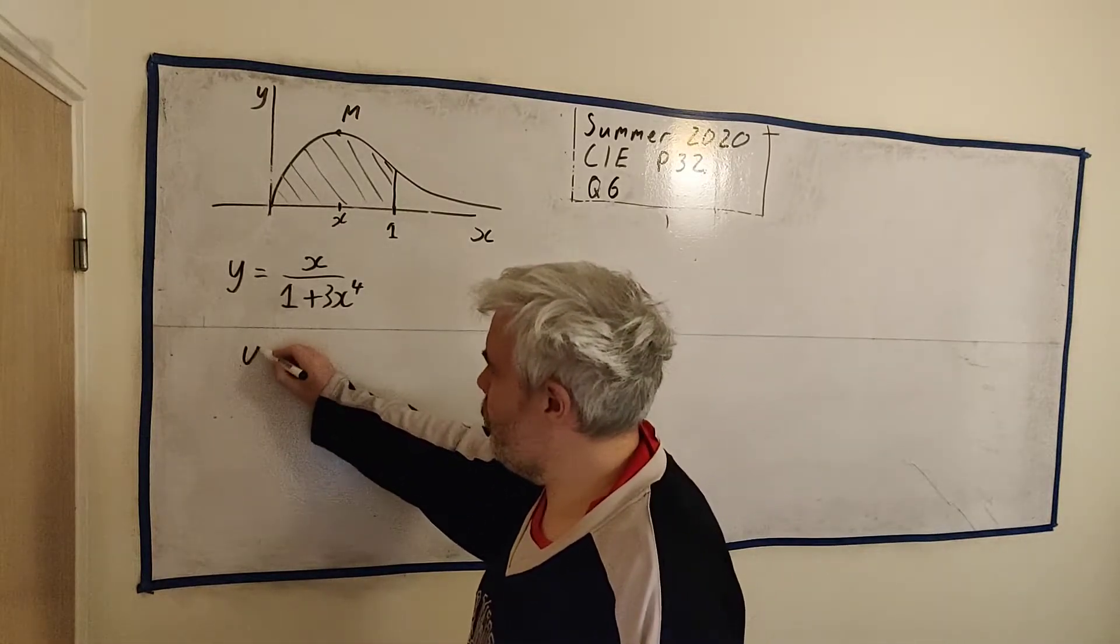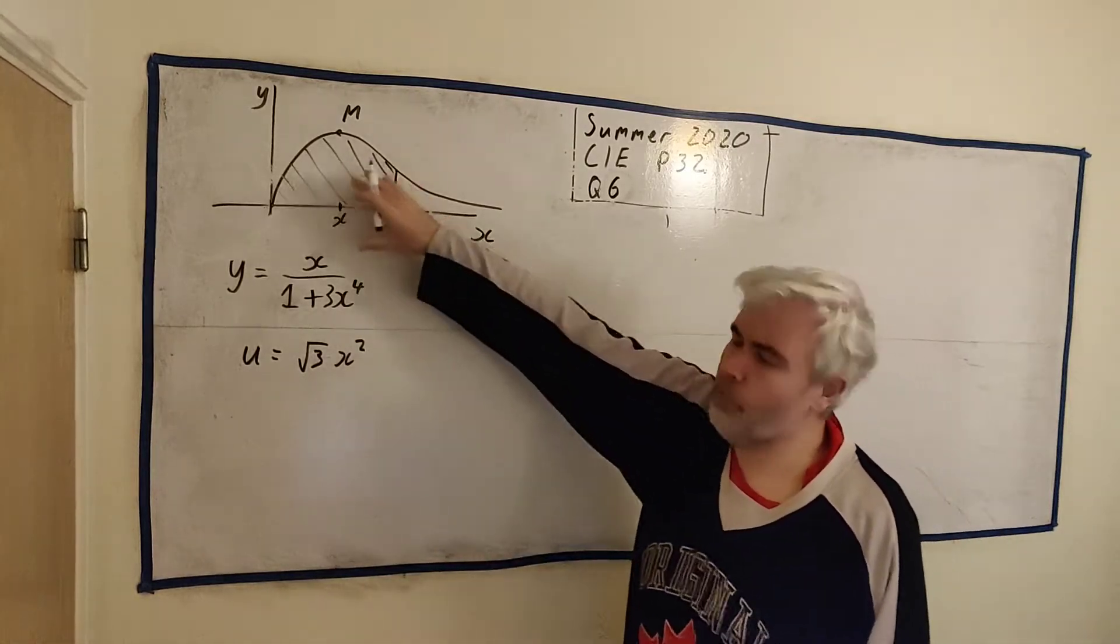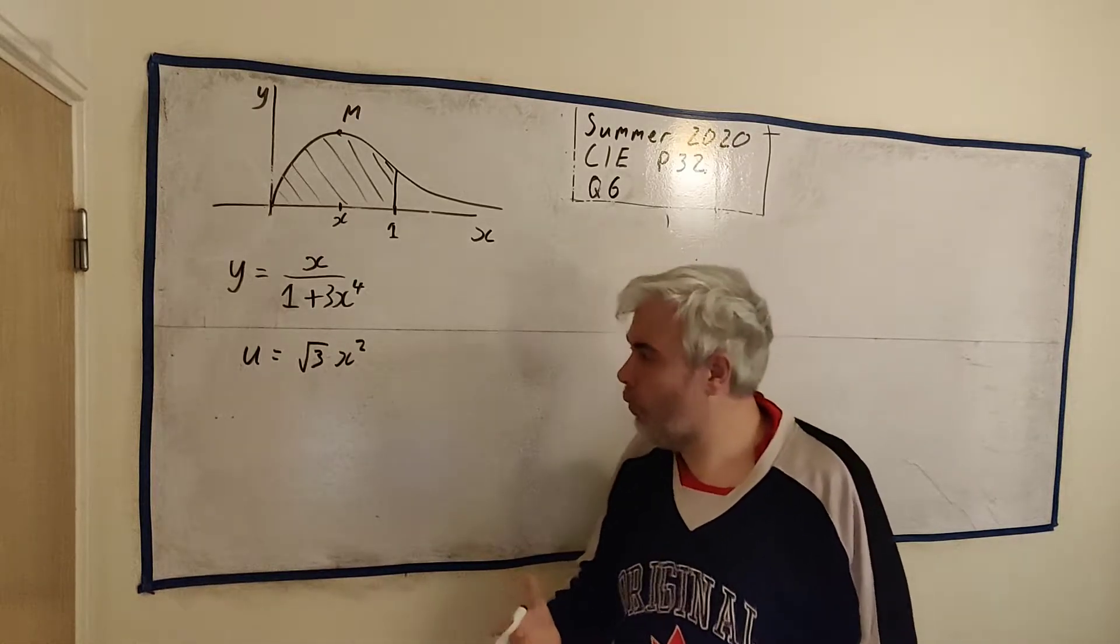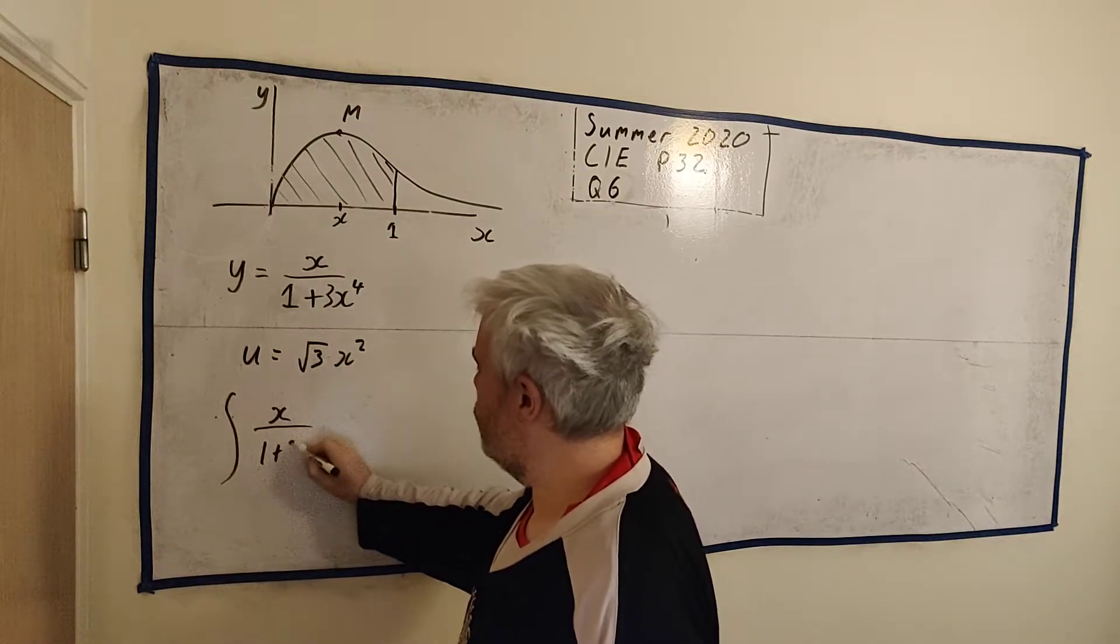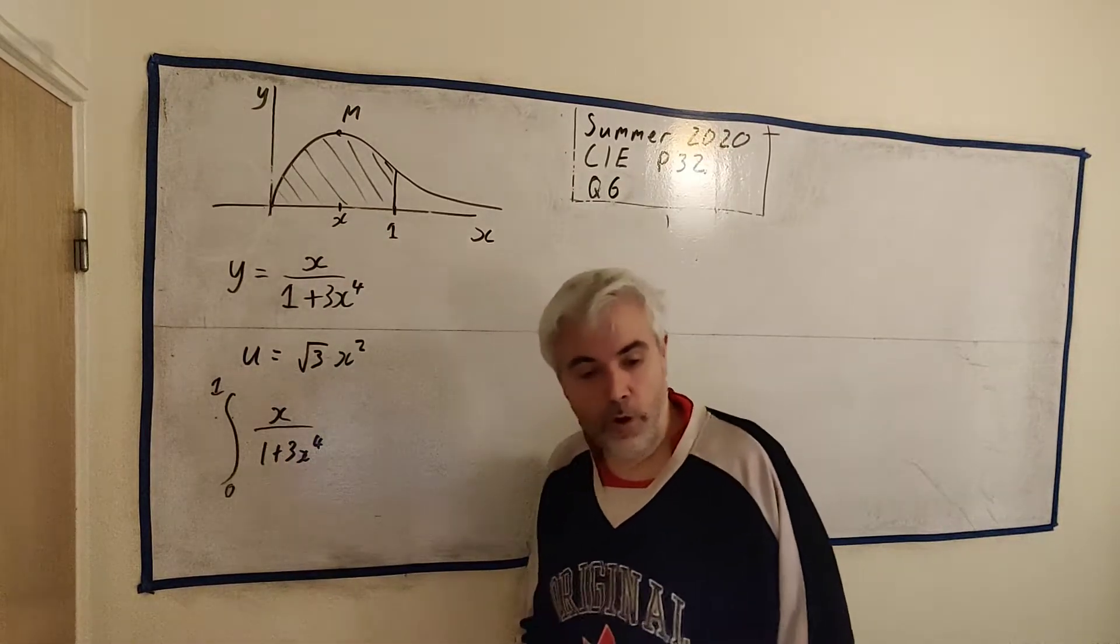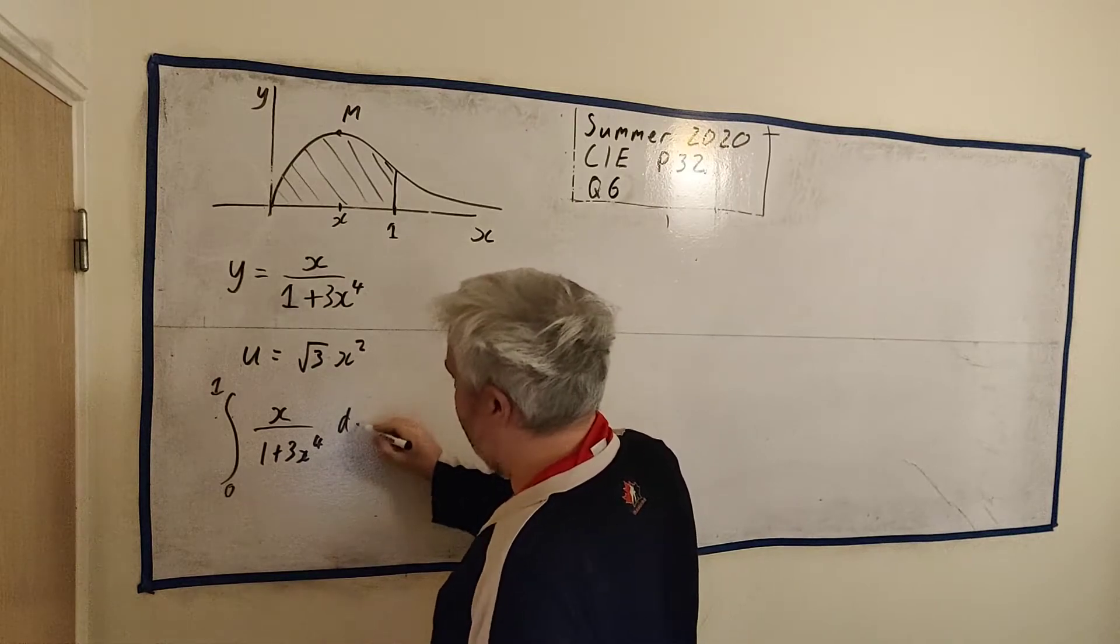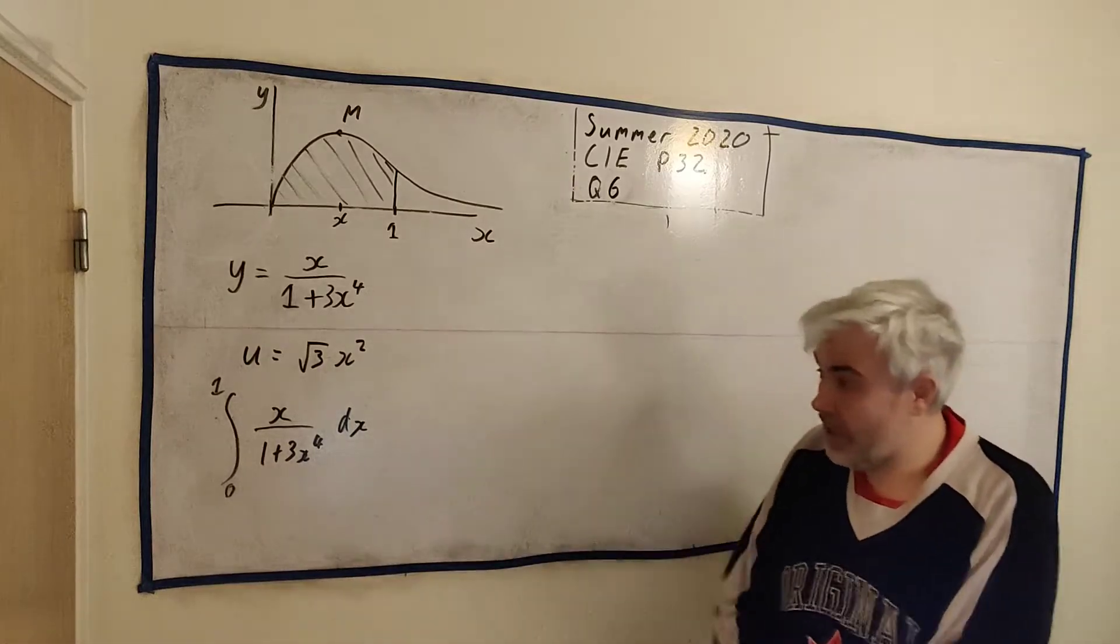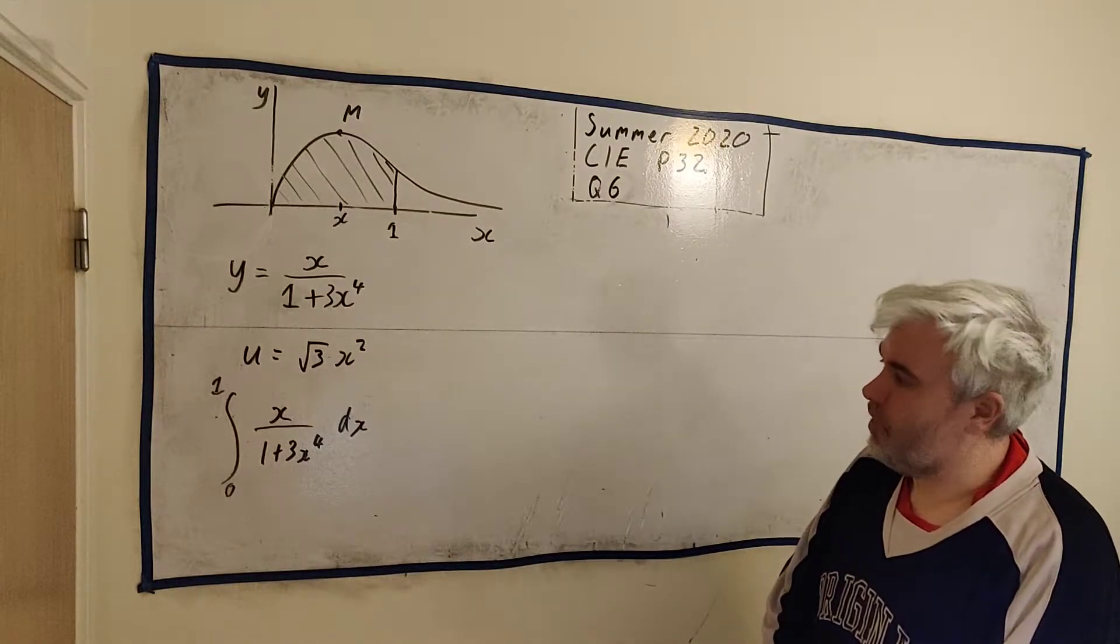In part B, they tell us to use the substitution u is equal to the square root of 3 times x squared, to find the shaded region here. What they're asking you to do is integrate. Integrate x over 1 plus 3x to the power of 4, all the way between 0 and 1 dx. They're giving us a clue how to integrate this, because this is not an easy integral.